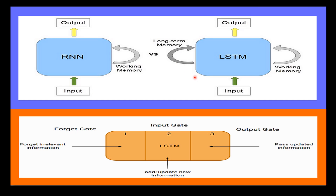The LSTM would be able to remember this information from years ago, even if it has not seen the person's income data for a while. In addition to memory cells, LSTMs also have gate mechanisms that control the flow of information into and out of the memory cells. These gates allow the LSTM to selectively choose which information to remember and which to forget. That is why LSTMs are often used for tasks such as language translation, where it is important to consider the context of previous words or phrases.